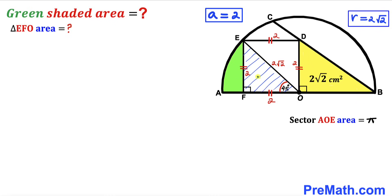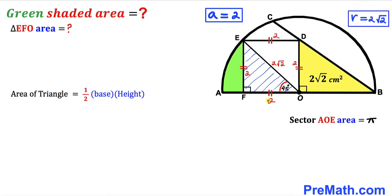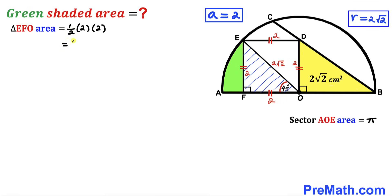Next we calculate the area of right triangle EFO using area = ½ × base × height. The base is 2 and the height is 2, so the area of triangle EFO = ½ × 2 × 2 = 2 cm².